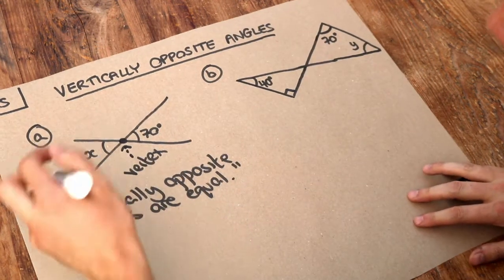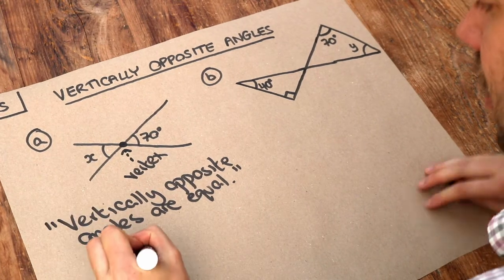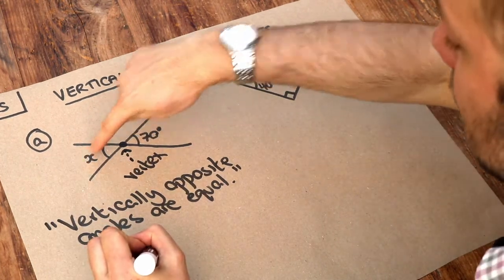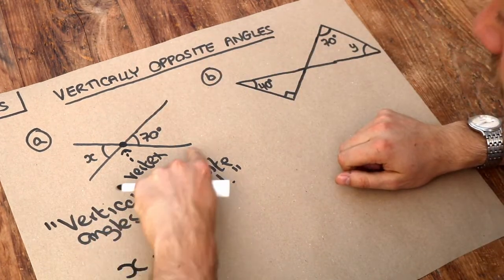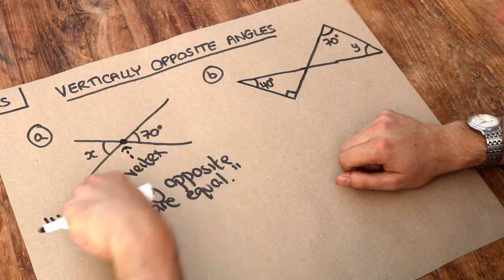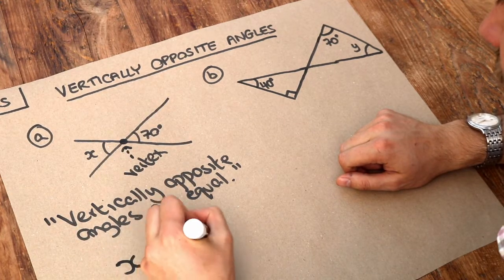So in this particular case, x is just going to be 70, because it's vertically opposite that angle there and we have these two straight lines meeting together.